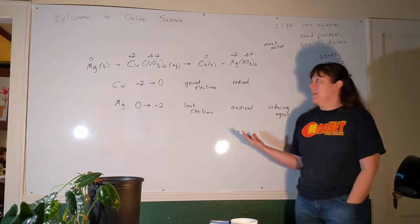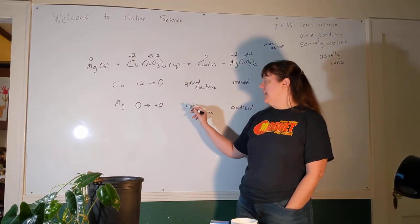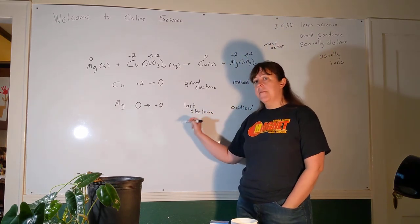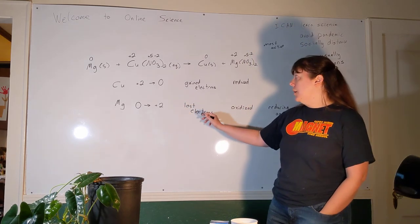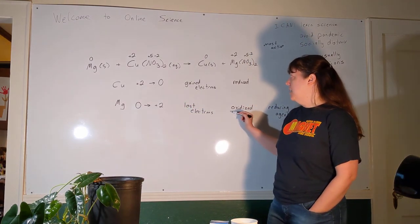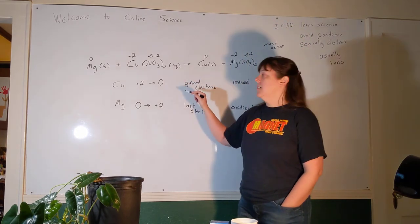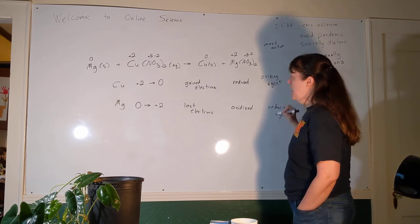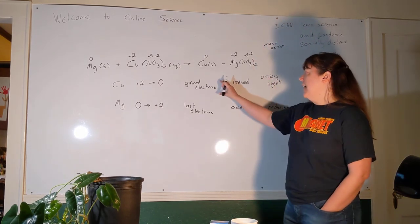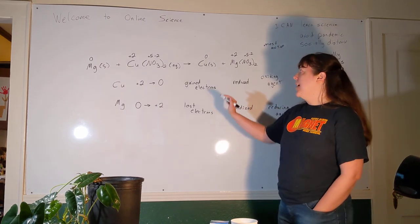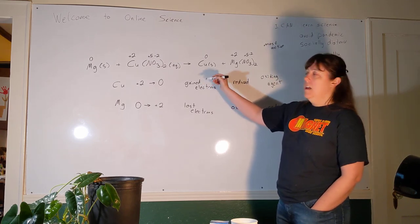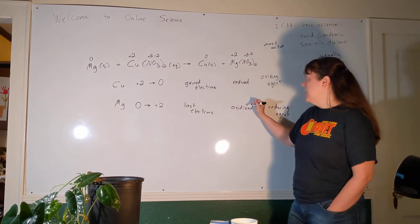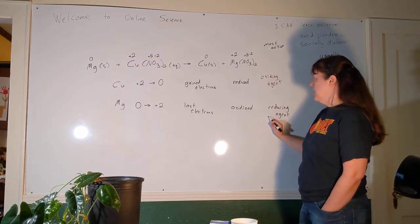We can make the reverse argument for magnesium. Magnesium was oxidized — it had to lose electrons — but it can't just drop electrons on the ground. Something had to take them. The thing that took magnesium's electrons and allowed magnesium to be oxidized was the copper, so copper is the oxidizing agent. Oxidation and reduction always happen in pairs: the thing that's oxidized is the reducing agent, and the thing that's reduced is the oxidizing agent.